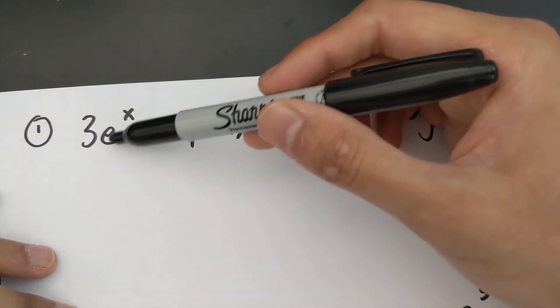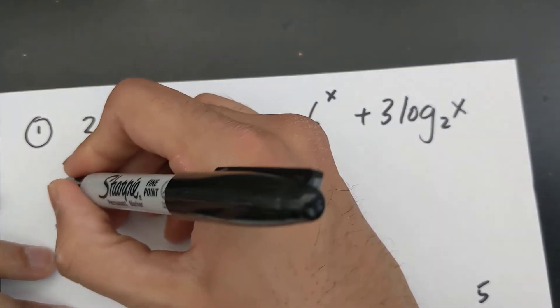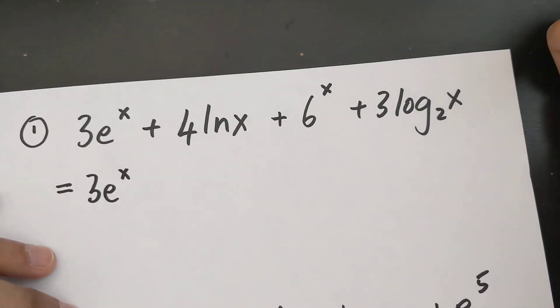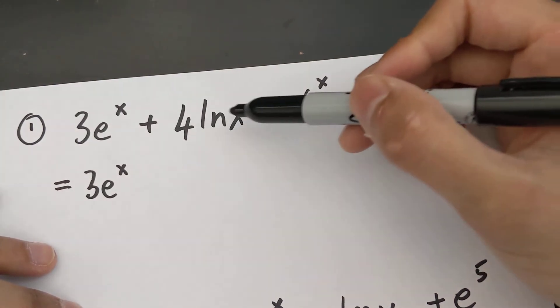If you have e to the power of x and you're deriving just e to the power of x, it's always the exact same thing. So the derivative of 3e^x is the exact same thing.